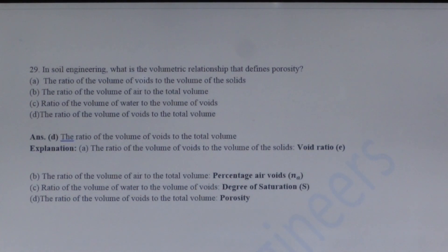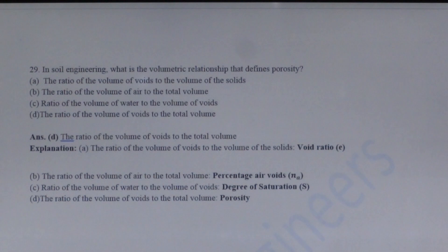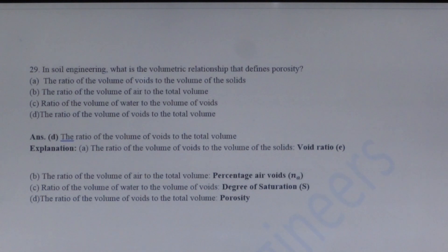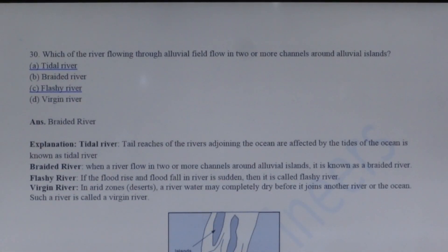Next question: In soil engineering, what is the volumetric relationship that defines porosity? Option A — the ratio of volume of voids to volume of solids — is known as void ratio. Option B — the ratio of volume of air to total volume — is known as percentage air voids. Option C — the ratio of volume of water to volume of voids — is known as degree of saturation. Option D is the correct answer defining porosity.